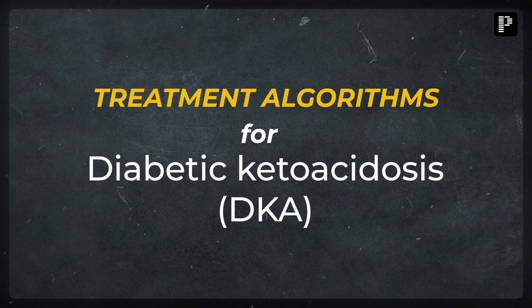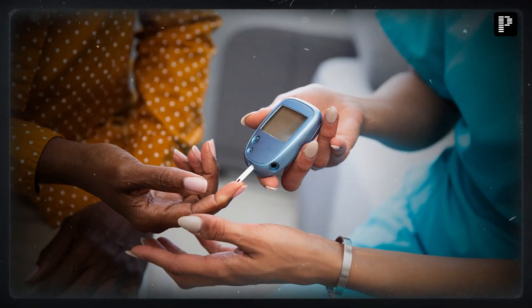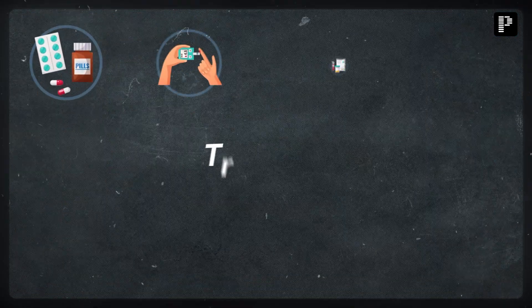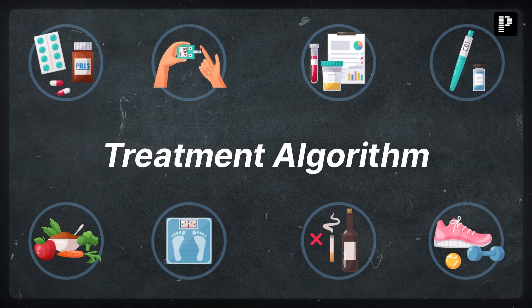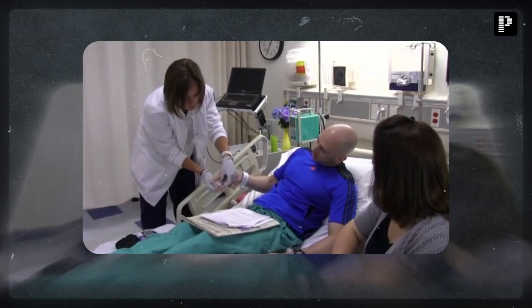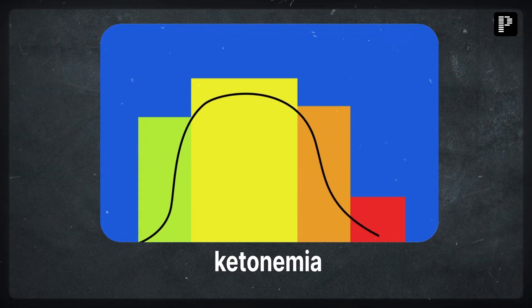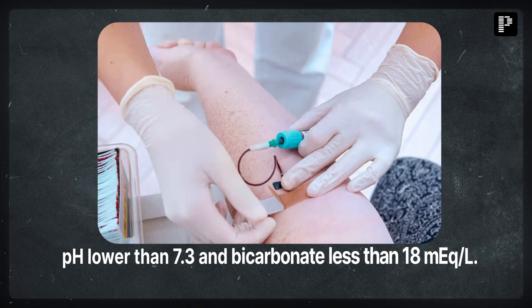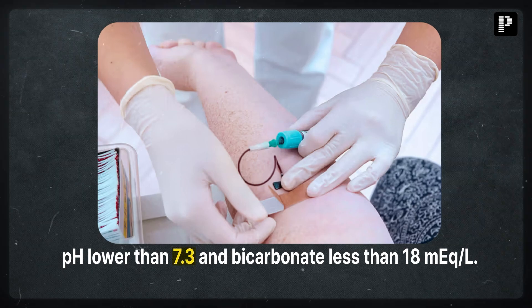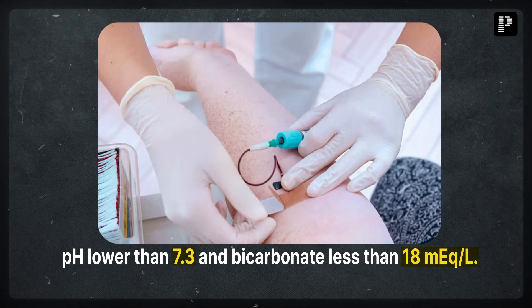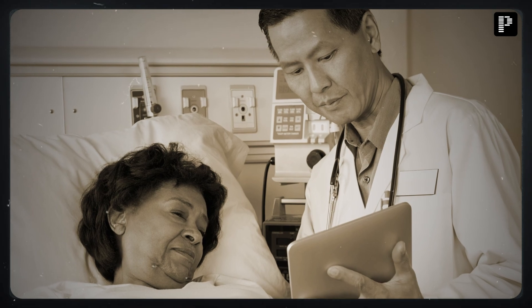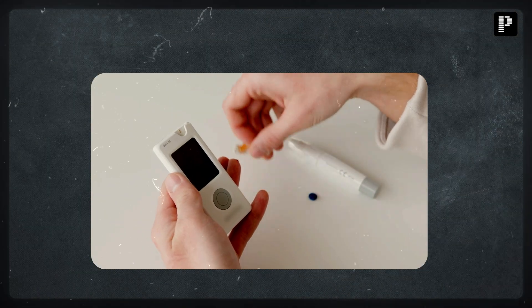Diabetic ketoacidosis, or DKA, is a serious complication of diabetes. Here is a treatment algorithm for the same. First, here's what we look for: blood glucose levels above 250 milligrams per deciliter, ketonemia, and metabolic acidosis with a pH lower than 7.3 and bicarbonate levels less than 18 milliequivalents per liter. Once DKA is confirmed, evaluate the severity.